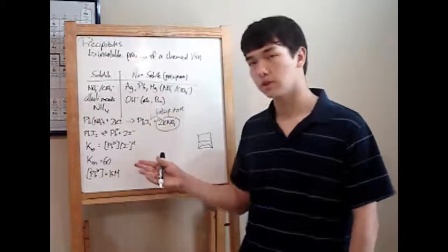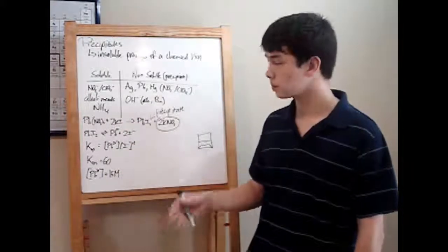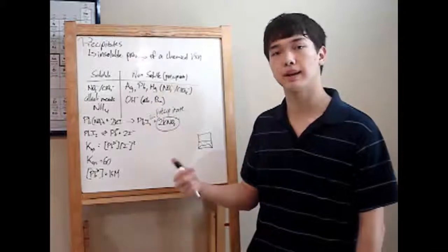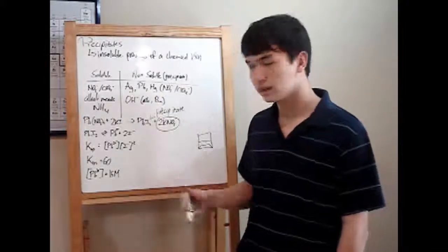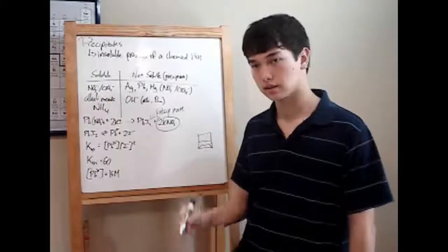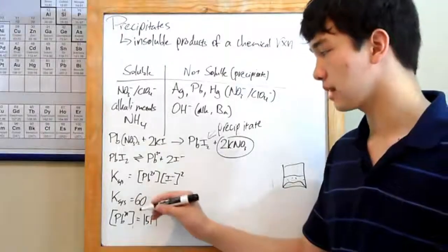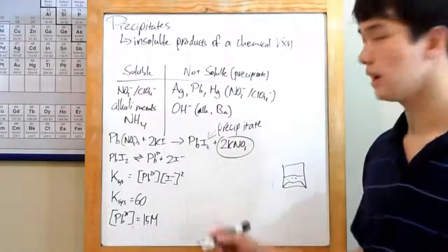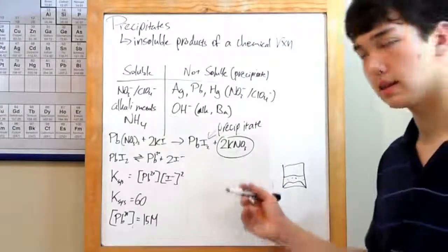Now, you might use this to solve for the concentration of one of your ions, or maybe your equilibrium constant, depending on the question your teacher asks. Usually, you'll be asked to solve for a concentration, and you'll be given your equilibrium constant. In this instance, we have an equilibrium constant of 60, and a concentration of Pb2+ of 15 molar.